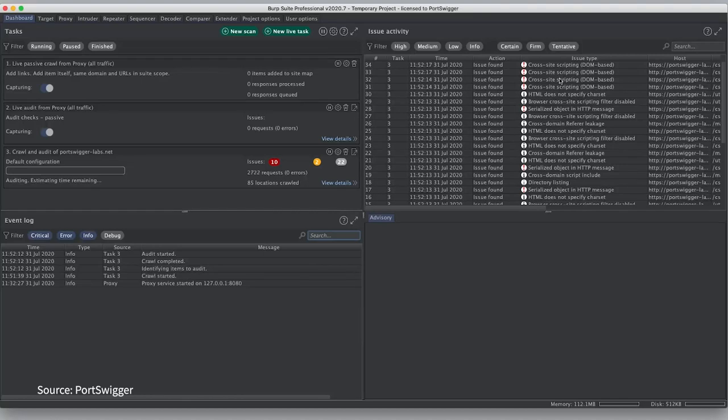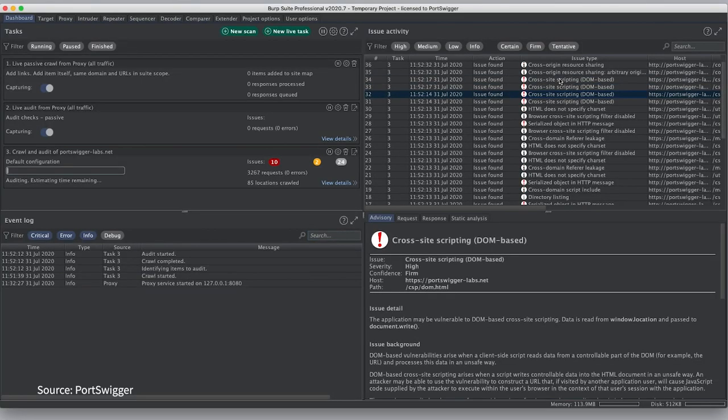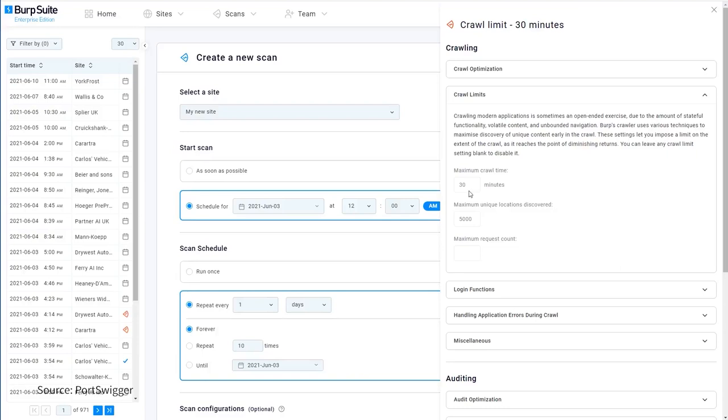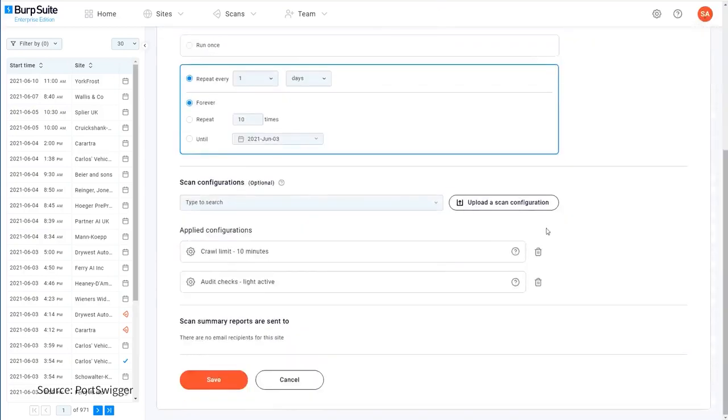Third tool is Burp Suite. Ethical hackers and security engineers vastly use Burp Suite for vulnerability scanning and penetration testing of REST APIs. Burp Suite Enterprise Edition contains Burp Scanner that can be used to scan web applications and API endpoints for security vulnerabilities.